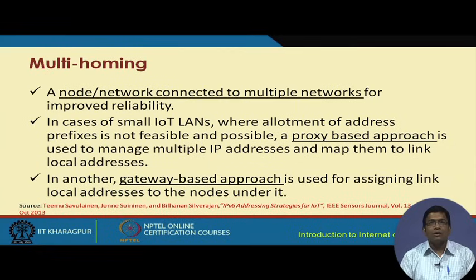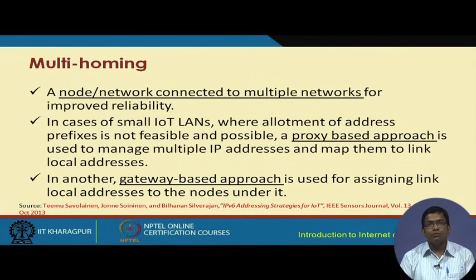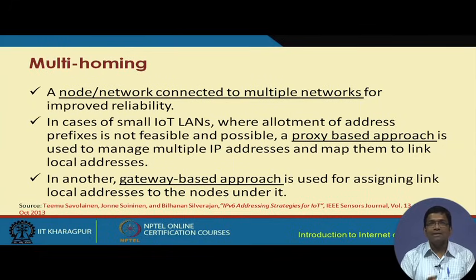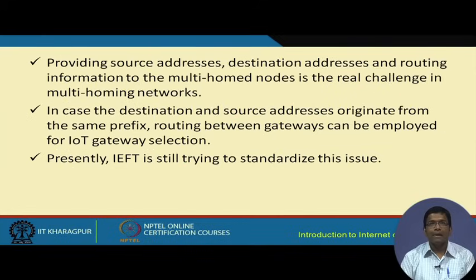There is a concept of multi-homing, where a particular node, IoT device, or IoT sub-network can be connected to multiple networks for improving reliability. If some component of the network or a node goes down, another network can take over. For multi-homing, two approaches can be used — a proxy-based approach or a gateway-based approach. Providing source address, destination address, and routing information to multi-homing nodes is the real challenge, and the IETF is presently trying to standardize this.